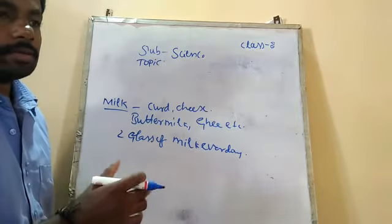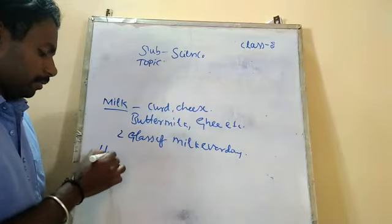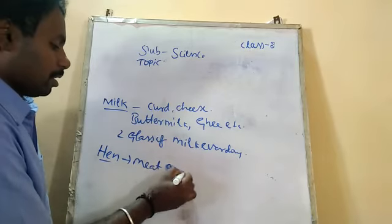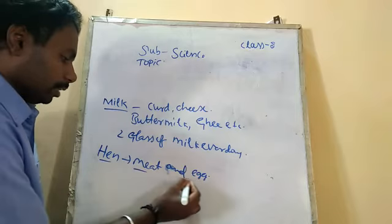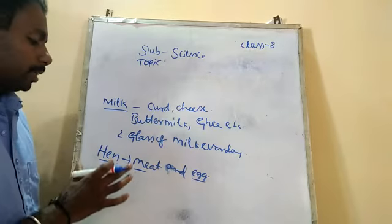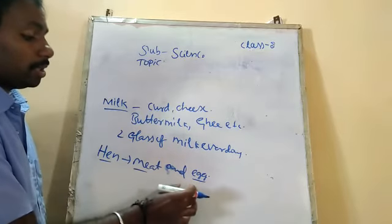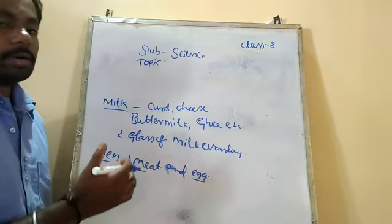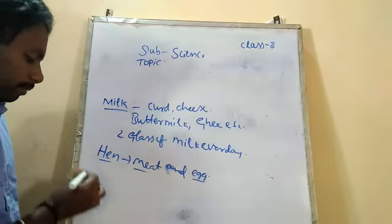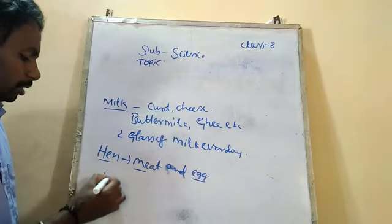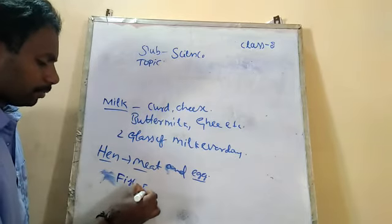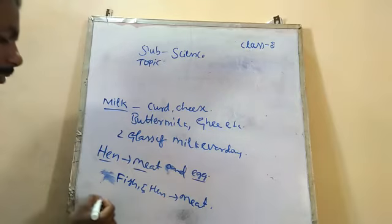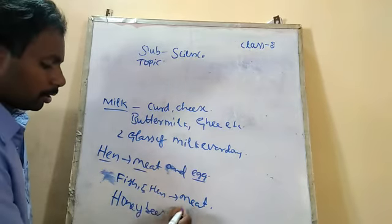From animals also you can get so many kinds of food products — for example, fish and egg. We get meat and eggs from animals. The egg is a very protein-rich food, so you should eat one egg every day to keep your body strong. From honey bees, the product you get is honey.